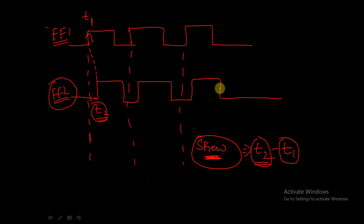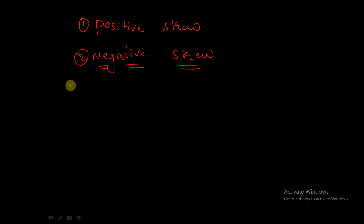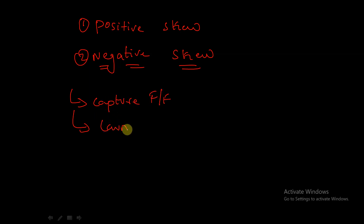Clock skew is divided into two types: positive skew and negative skew. Before discussing the difference, let's understand some terminologies — capture clock and launch clock. For that we need to understand what is a capture flip-flop and what is a launch flip-flop. There are two types of devices: capture and launch.